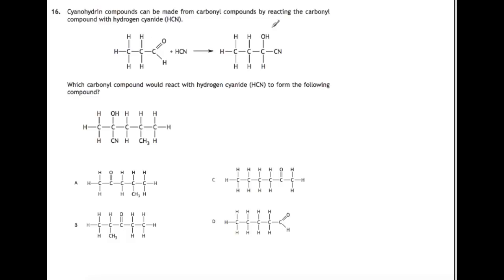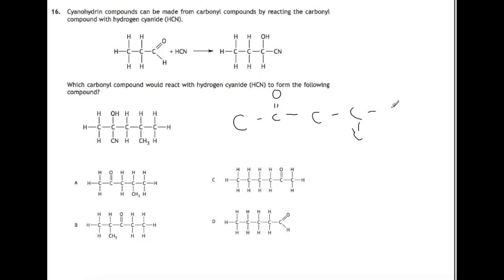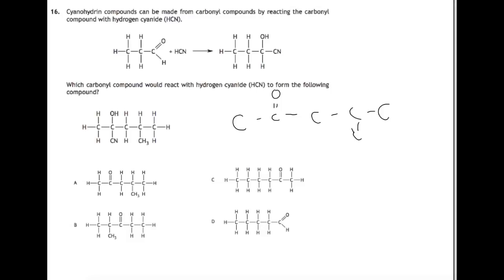Here we have a reaction where you're adding HCN across the C=O double bond to get this product. We've got another product to look at and we're trying to work out what we started with. We've added HCN across this bond, so we must have started with a reactant with that structure. Looking at the options, A fits this one the best.